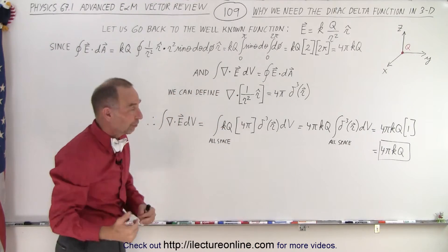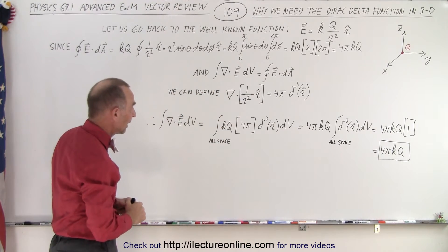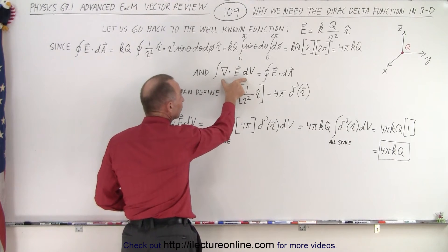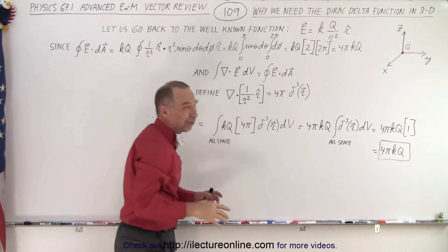k of course being 1 over 4π epsilon sub not. And we remember that in the past we saw that the left side ended up being equal to zero. That the gradient of the electric field of a point charge was equal to zero.